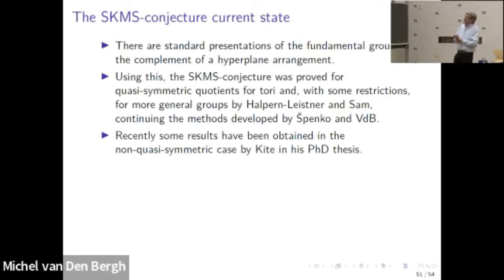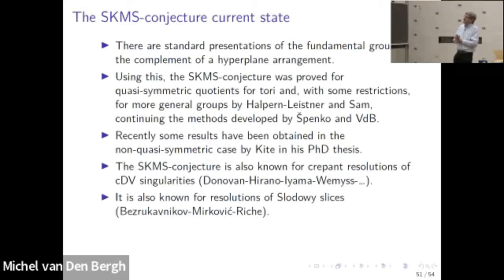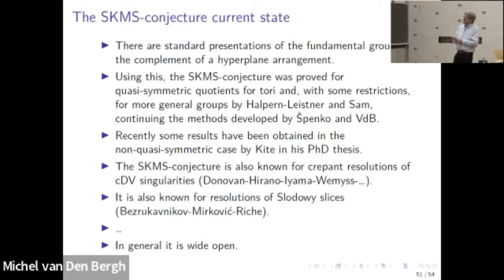In the non-quasi-symmetric case, this is wide open. There are some examples done in Crichton's PhD thesis. A very important case if we go away from quotient singularities has been done by people working with Michael Wemyss. In representation theory there are also cases. No doubt I'm forgetting to mention things, but as I said, in general it remains wide open.